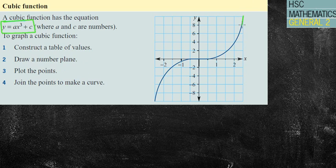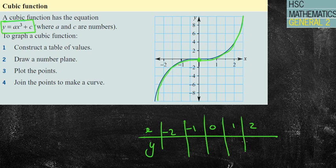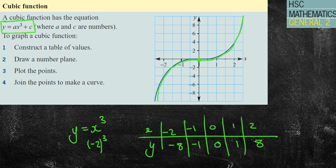It kind of looks like a parabola to start with, but then when it gets to the origin, you can see it goes upside down. If I do a table of values using negative 2, negative 1, 0, 1, and 2 in y equals x cubed: negative 2 cubed is negative 8, negative 1 cubed is negative 1, 0 cubed is 0, 1 cubed is 1, 2 cubed is 8. You can see the left-hand side reflects the right-hand side, except with negative y values.